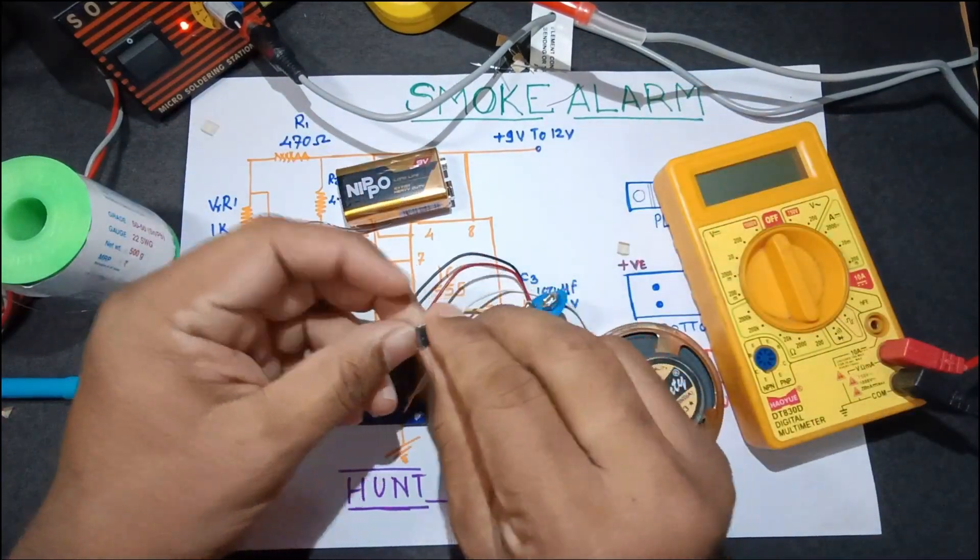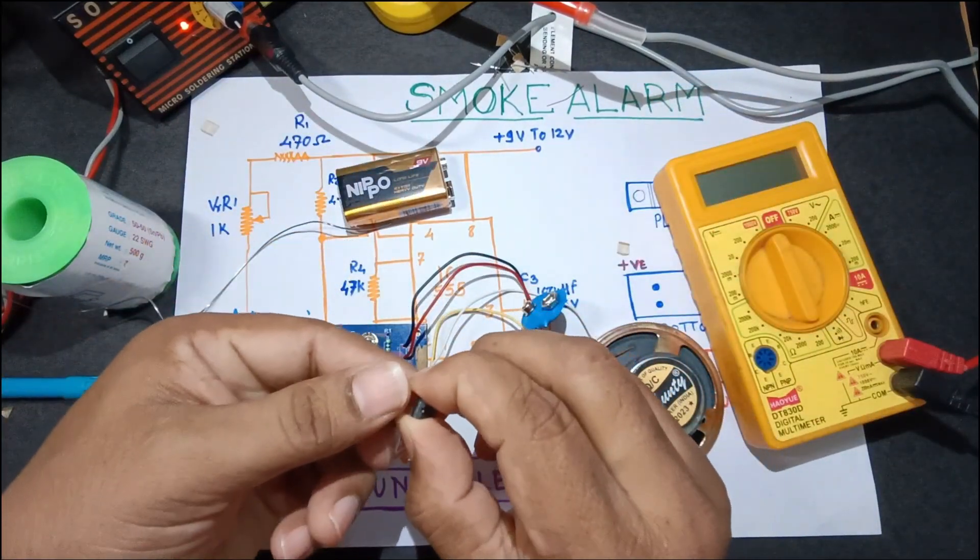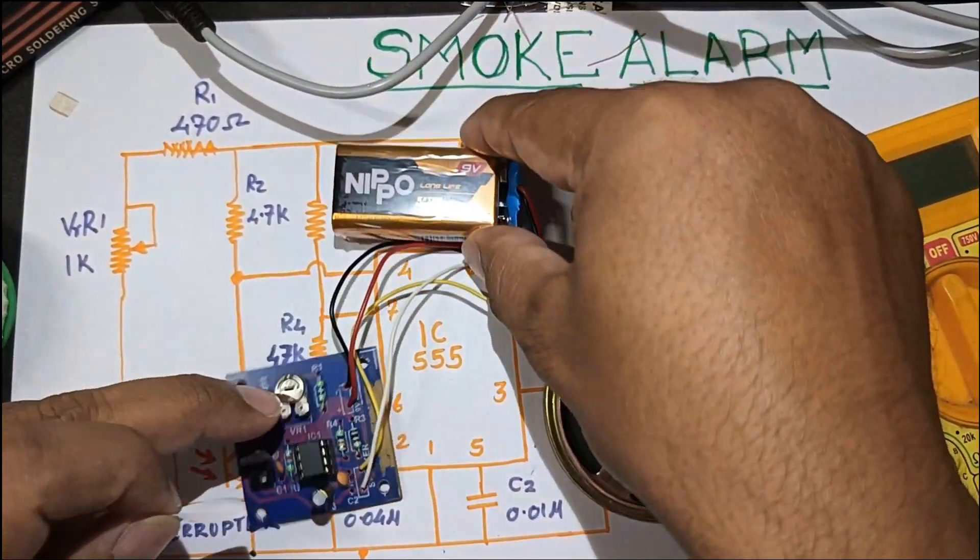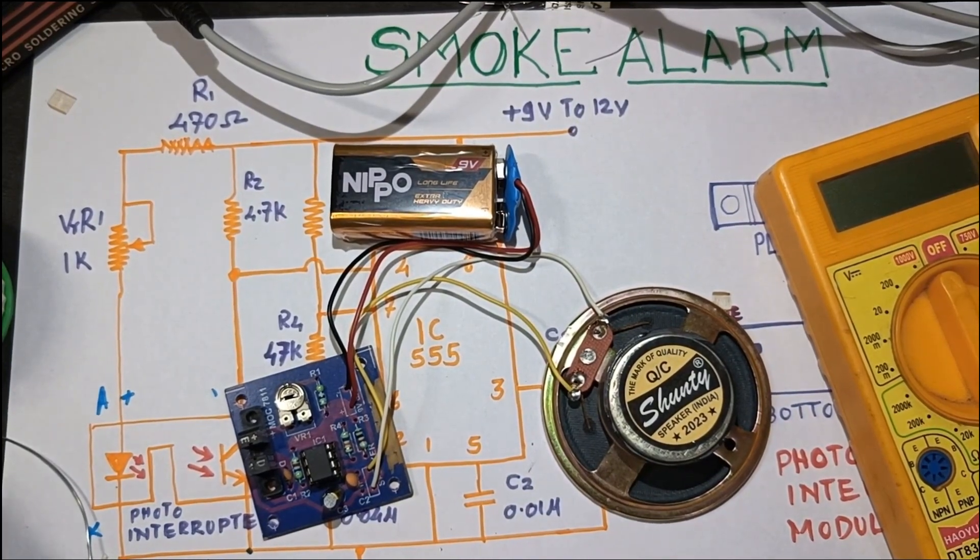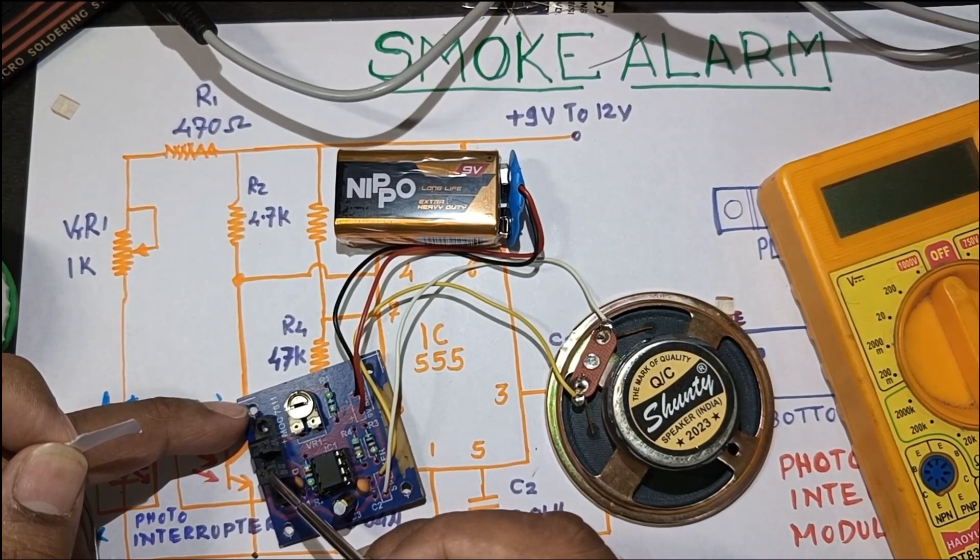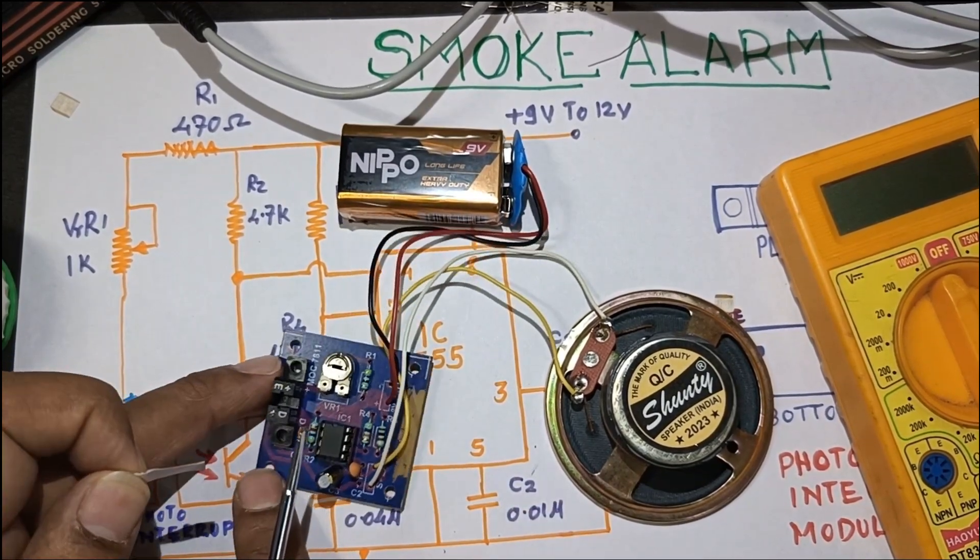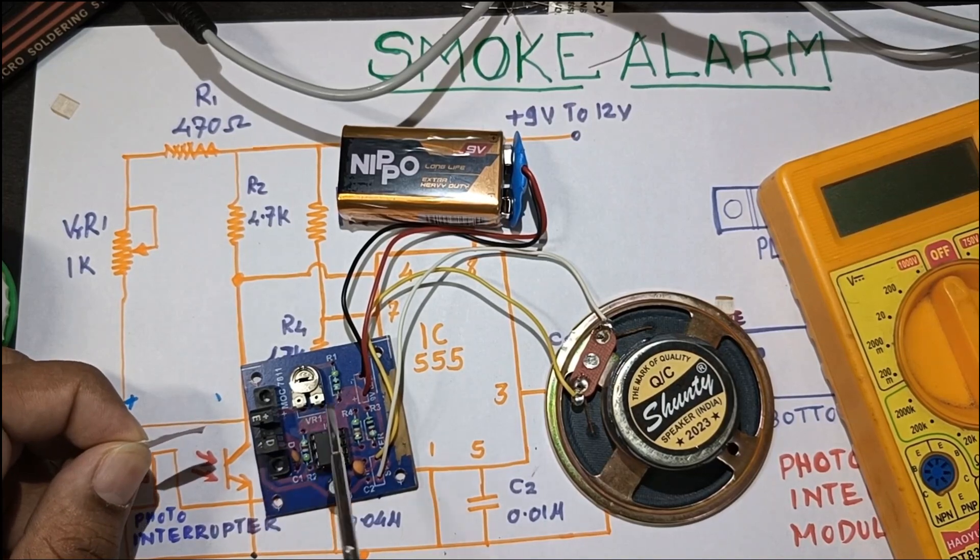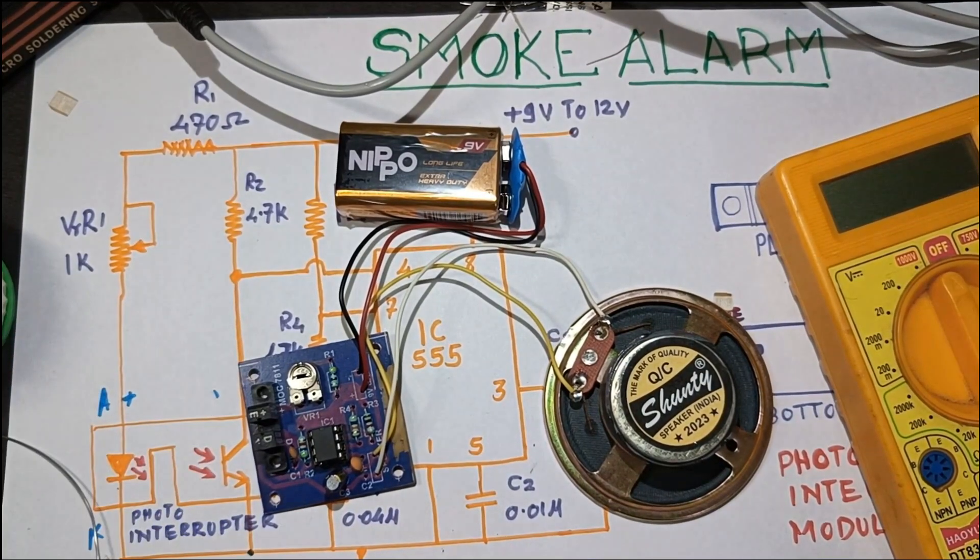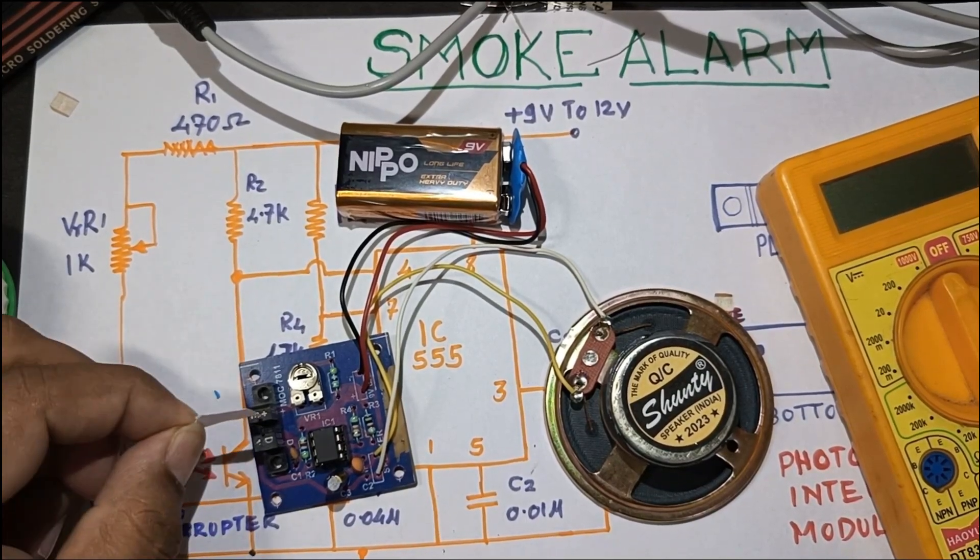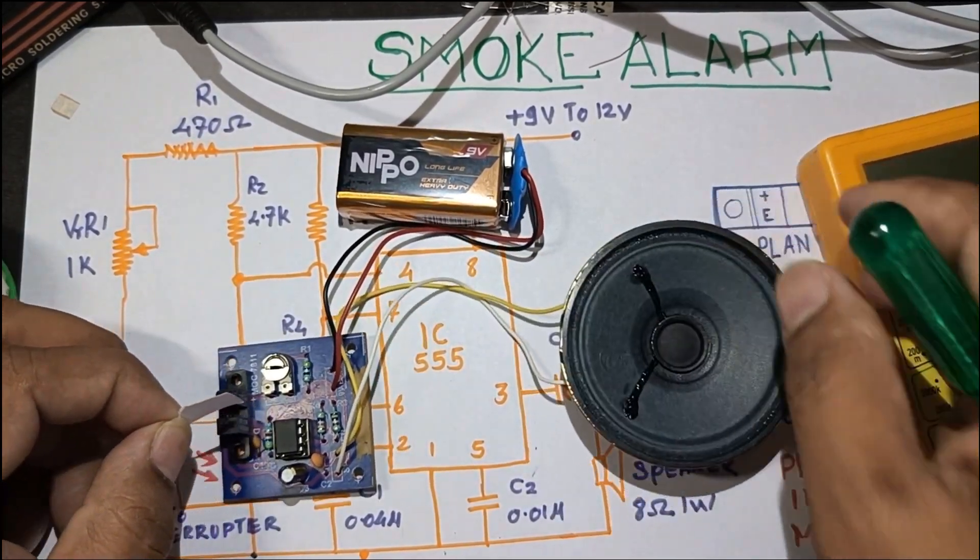So this circuit, okay friend. Now we have already powered the circuitry. You can see here, here it is an LED and here it is a photo transistor. When we are going to put interrupt between this, it will turn on the alarm. You can take a piece of paper and you can see, you can hear that sound.